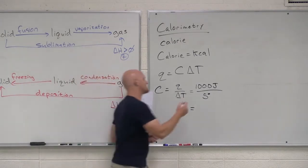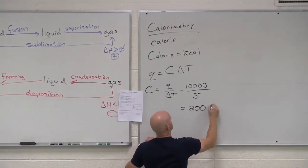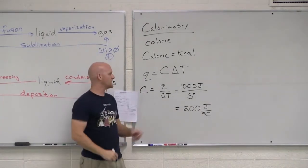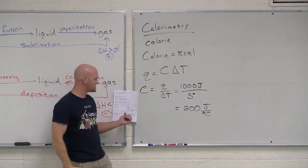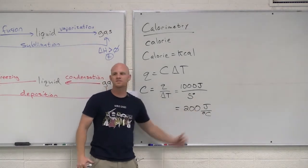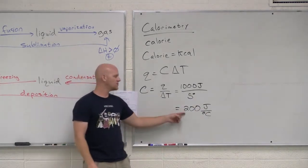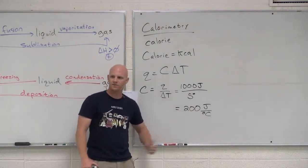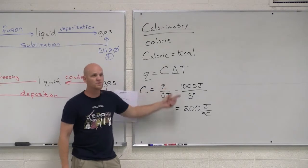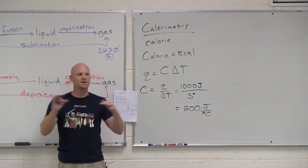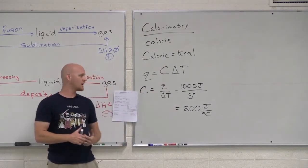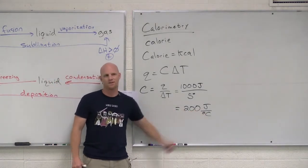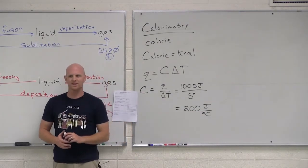In this case, what is a thousand divided by five? Let's say that was in Celsius. So the heat capacity of this calorimeter or object is 200 joules per degree Celsius. What this means is it takes 200 joules to change it one degree Celsius. If I gave it 400 joules, it would change two degrees. If I gave it a thousand joules, it would change five degrees. That's what the heat capacity tells us.